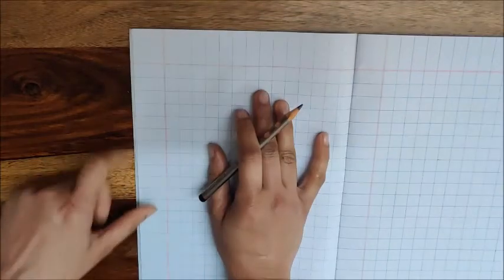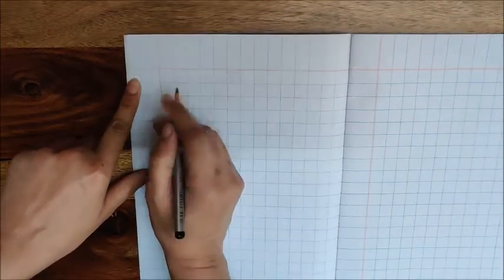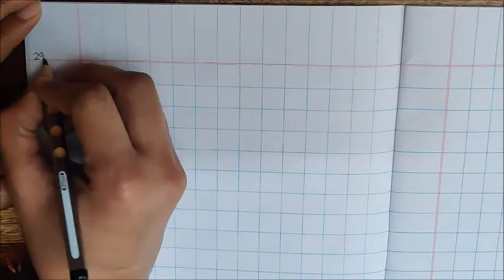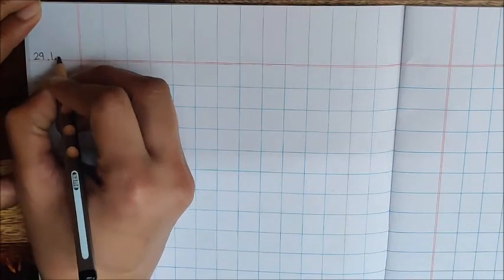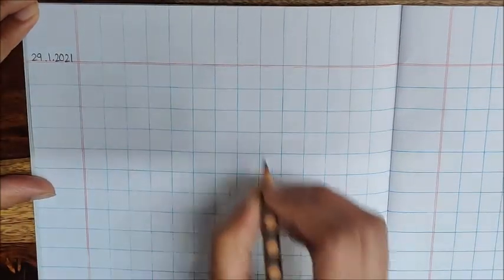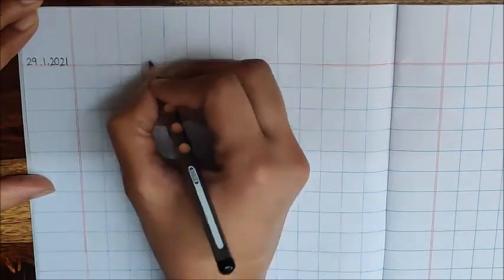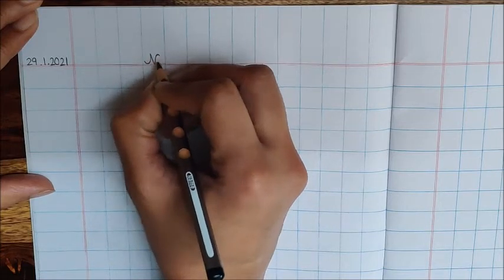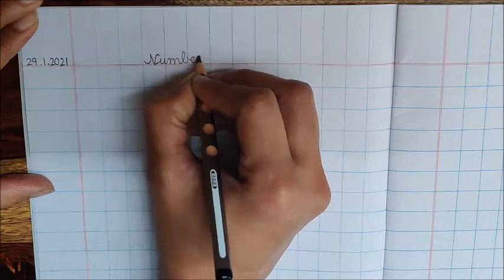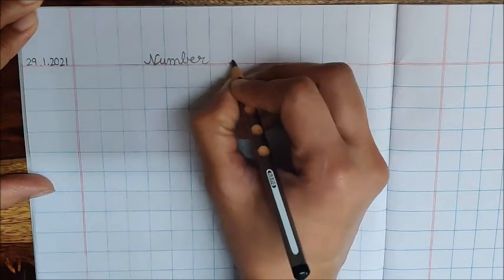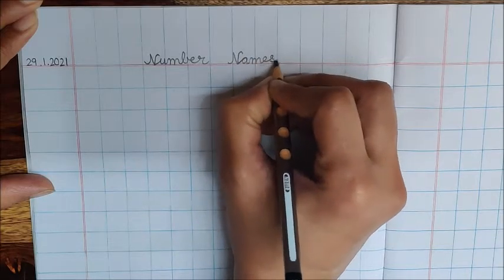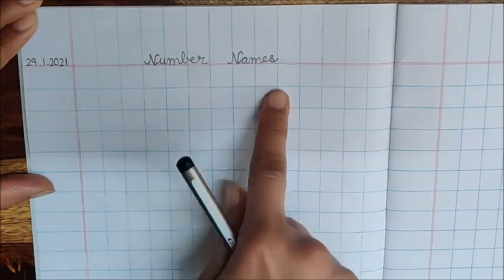Write down here today's date. Today is January 29, 29.1.2021. Now children, on the red line, write down number N-U-M-B-E-R. Number names, N-A-M-E-S. Number names.